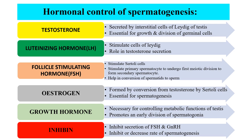Estrogen is formed by conversion from testosterone by Sertoli cells and is essential for spermatogenesis. Growth hormone is necessary for controlling metabolic functions of the testis and promotes early division of spermatogonia. Inhibin inhibits secretion of FSH and GnRH, thereby inhibiting or decreasing the rate of spermatogenesis.